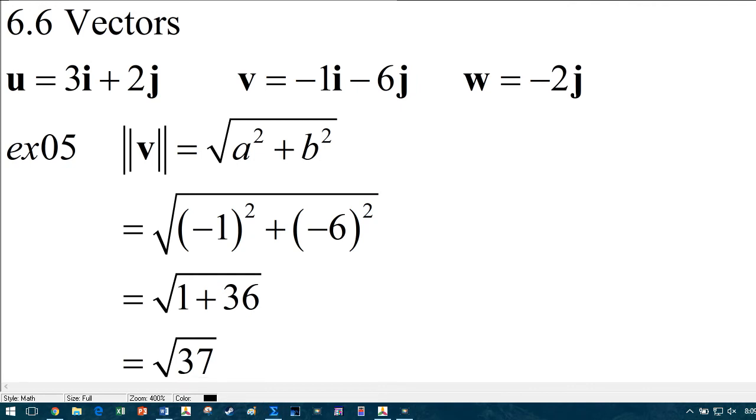Which, by the way, that just means if you graph the vector, how long, if you measured it with a ruler, and I know the ruler doesn't have square root of 37 on there, but the decimal that that's equal to, it's like 6 point something anyways, that's how long it would be. It'd be like a little over 6. So there's going to be a sum where you just ask for the magnitude? Yep.